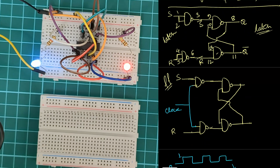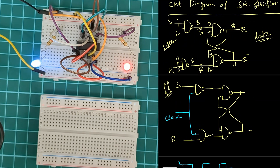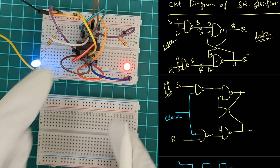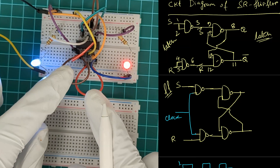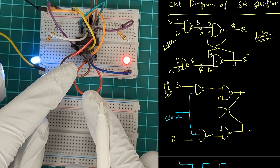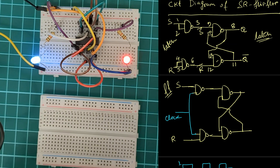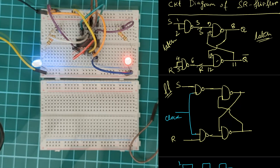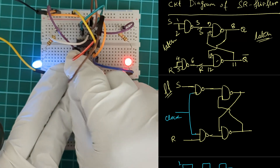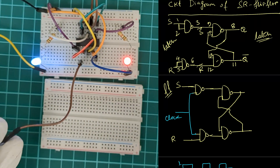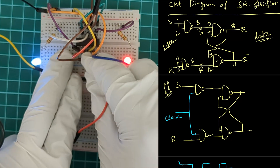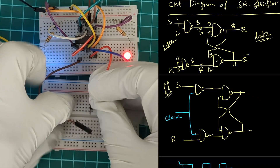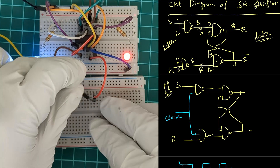To convert the SR latch to an SR flip-flop, the first thing we need to do is remove the connection from the first two NAND gates. The brown wire and the red wire — you can see these two are shorting pins 1 and 2, and pins 4 and 5. So first we remove those two connections. Then we need to add the clock pulse on pin 2 (the brown wire) and pin 4. So these two pins should receive the clock pulse, and I will connect that on the bottom breadboard.